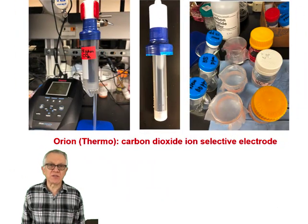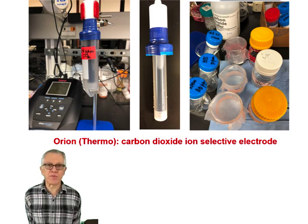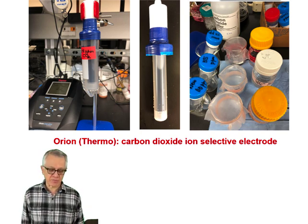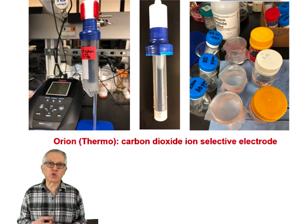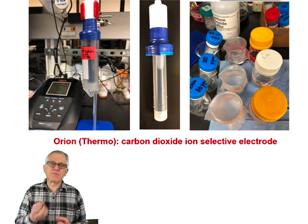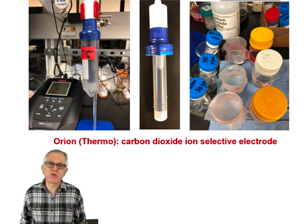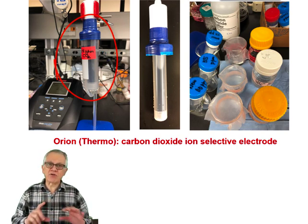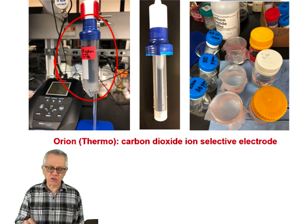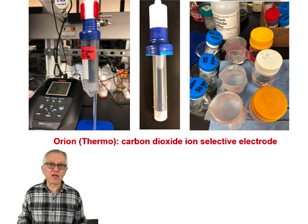We now wanted to test the hypothesis of whether the receptor is responding to CO2, to bicarbonate, or to protons. First, we developed a method to measure the concentration of CO2 in solution. We used a carbon dioxide ion-selective electrode from Thermo (formerly Orion). This device was developed to measure the total amount of CO2 — you lower the pH, forcing all the CO2 to come out, then measure its concentration. We modified it into a closed system so that, without changing the pH, we could measure the concentration of CO2 in solution at a given time.